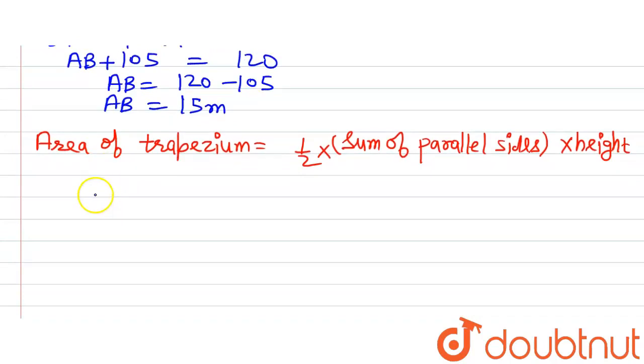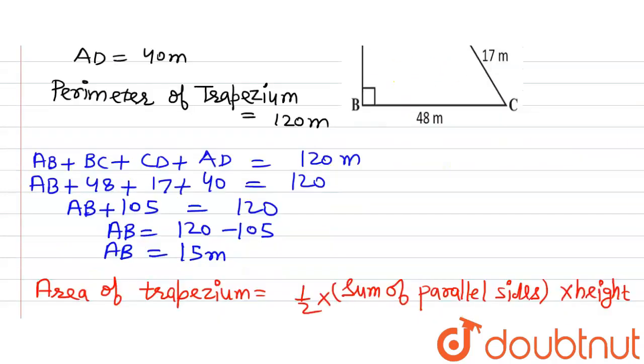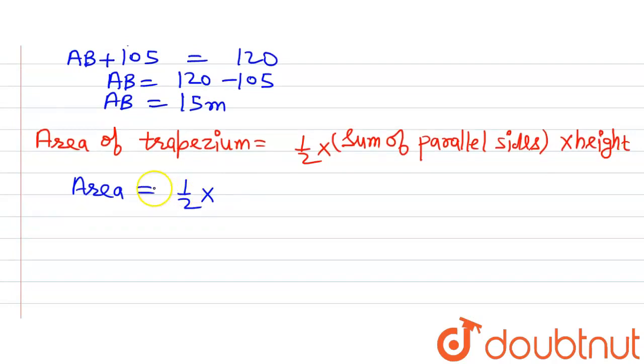Putting in the values in the formula we will get area is equals to half multiplied by AD is 40 meter and BC is 48 meters. So AD plus BC is 40 plus 48 meter multiplied by AB the height which is 15.